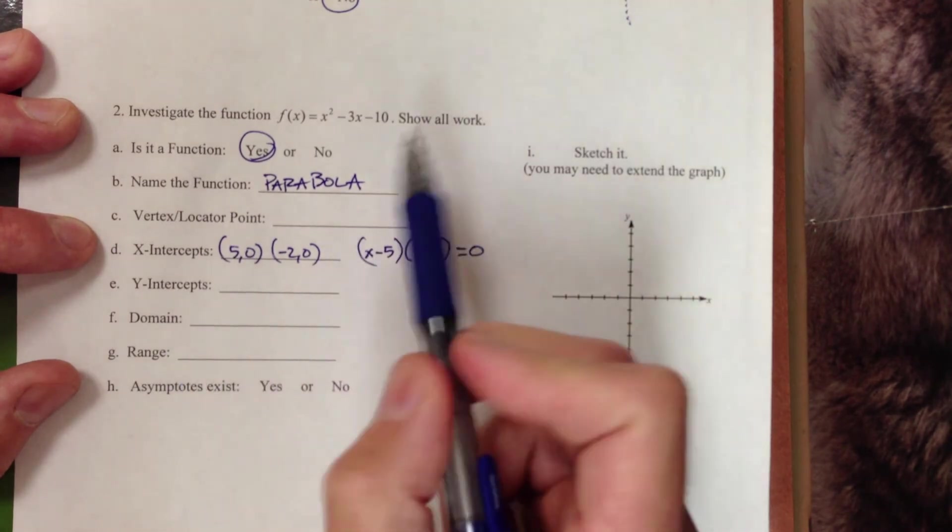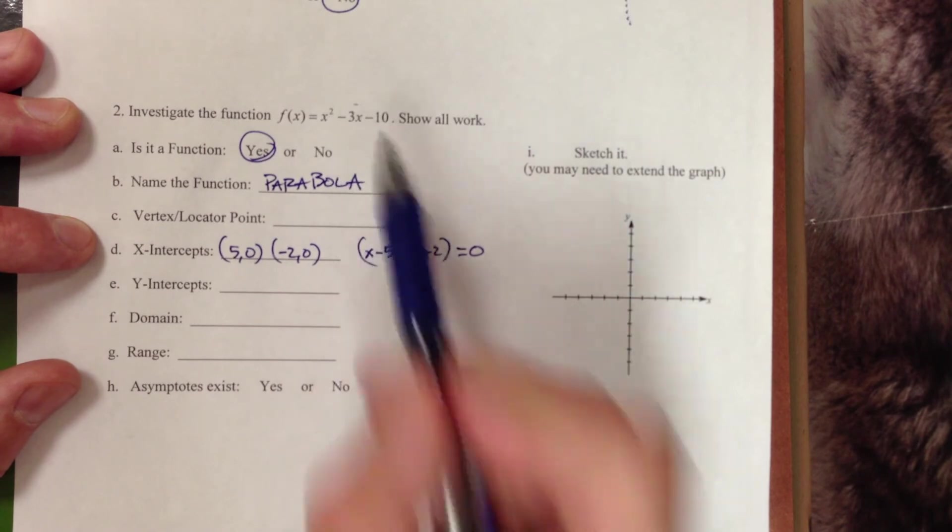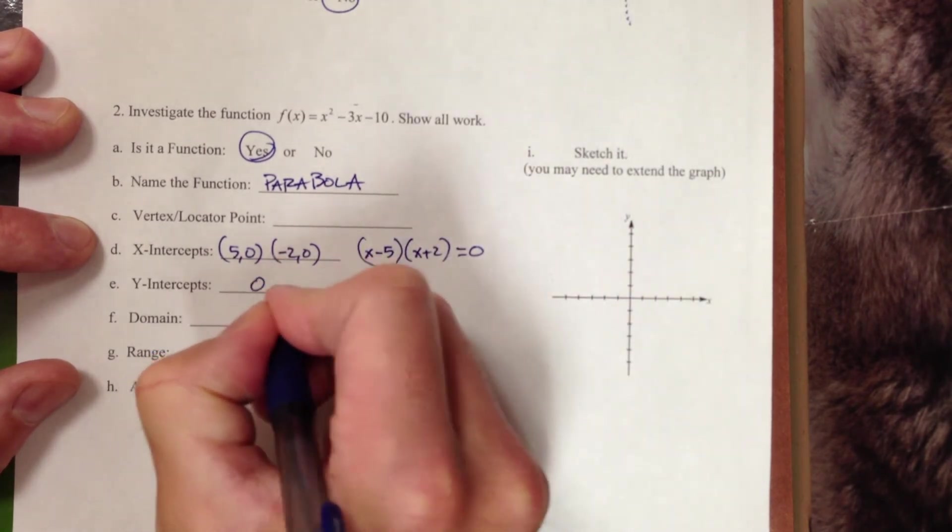Okay, y-intercept. Looking at it, if I make that 0 and that 0, they just kind of disappear and we are left with simply negative 10. 0 comma negative 10.